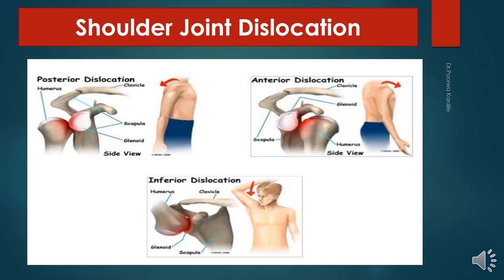The joint is least supported inferiorly. There are three types of dislocation: anterior, posterior, and inferior. Anterior dislocation is most common. Sudden violence on the humerus with the joint fully abducted tilts the humeral head downward, tears the inferior capsule, and the humeral head comes inferior to the glenoid fossa. The acromion acts as a fulcrum, and strong flexors and adductors pull the humeral head forward and upward into the subcoracoid position.